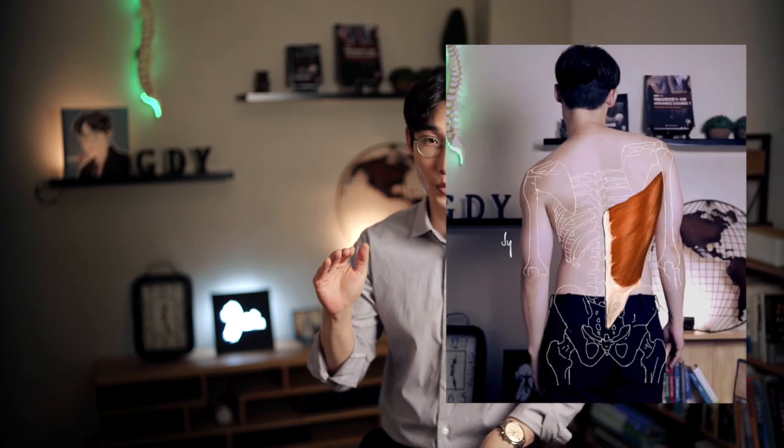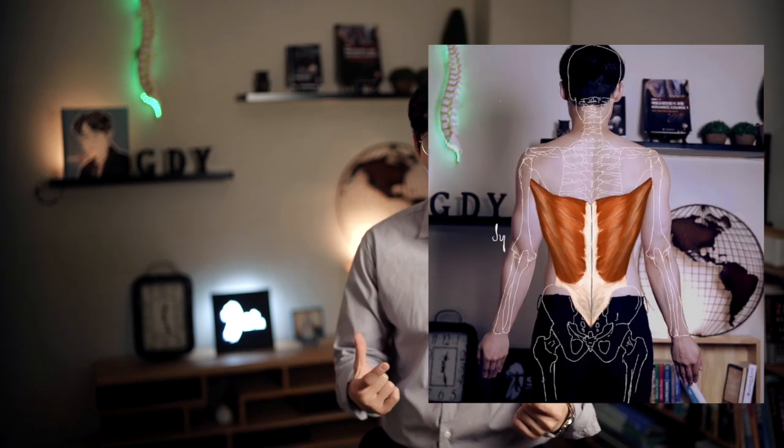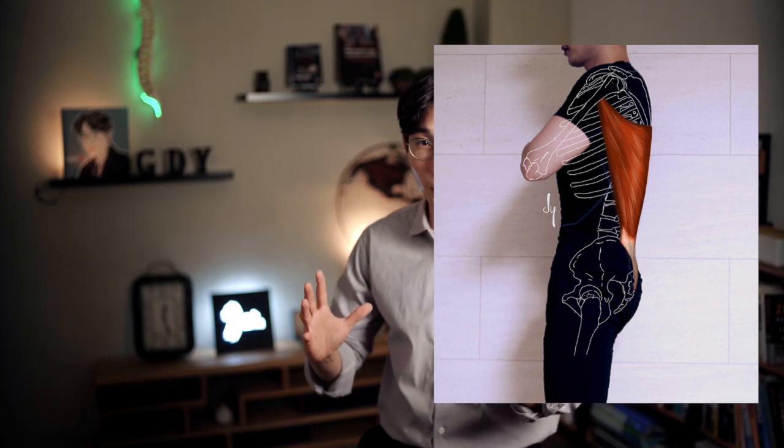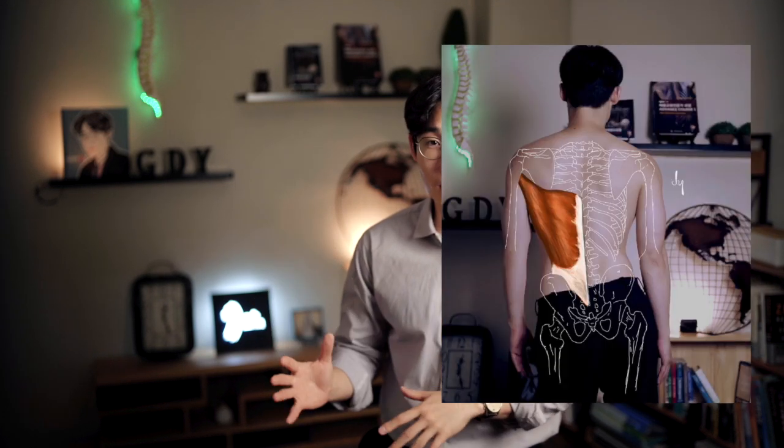Let's summarize body types in which the latissimus dorsi muscle is longer than normal length — it's easy to think the other way. First, the shoulder height is higher rather than neutral. Second, the shoulder joint is externally rotated rather than neutral. Third, the shoulder joint is flexed forward rather than neutral. Fourth, the pelvis bone is posteriorly tilted rather than neutral. Fifth, one side of the pelvic bone is lower than the other side.